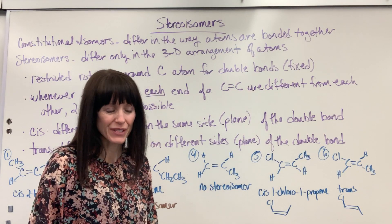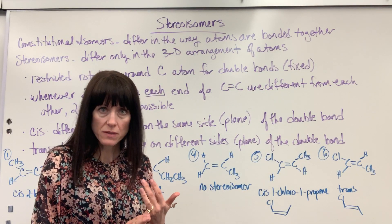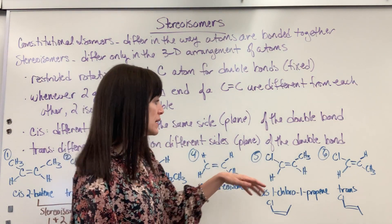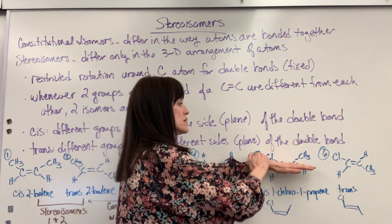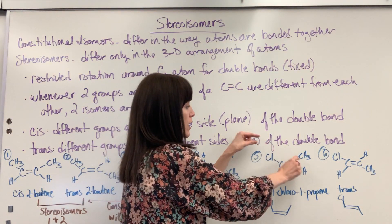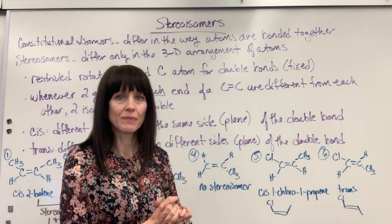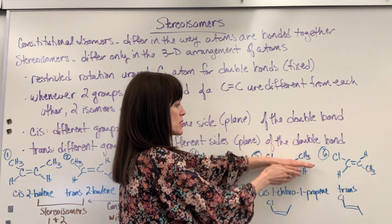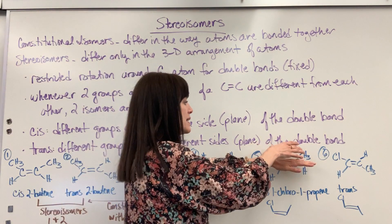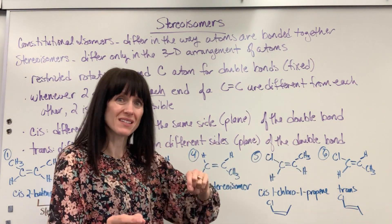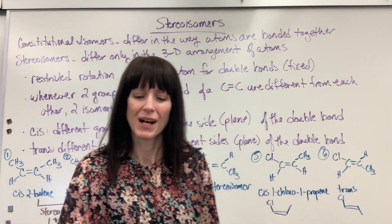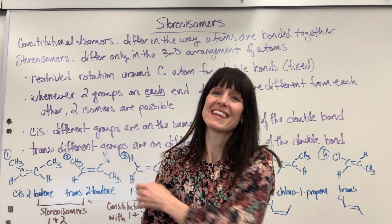So there you have it — stereoisomers. Same number of elements, the basic same structure, except you're looking at the attachments: are they on the same side of the carbons, or do they go across that double bond? If they're on the same side — both up top or both down below — that's cis. If they go across that double bond, that's trans. I hope that's helpful for you. Have a good day. Thanks for being here.